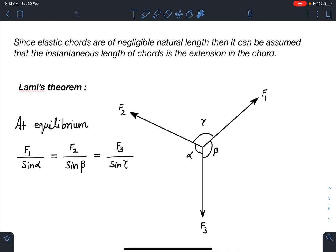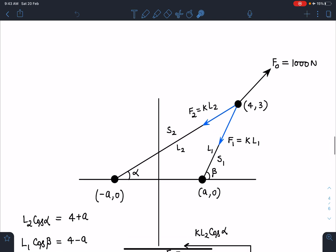Let's draw the force diagram. Corresponding to string S1 with length L1, the force is going to be KL1. Similarly for string 2, S2, with length L2, the corresponding force is KL2 where K is the force constant. These two forces F1 and F2 will balance the force F0 of 1000 Newton at point (4,3).